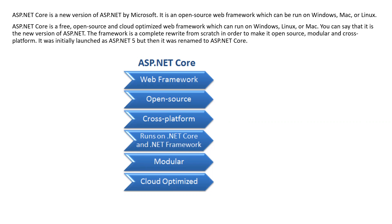ASP.NET Core was initially introduced by Microsoft and later built as an open source framework. It is a free, open source, and cloud-optimized framework which can run on Windows, Linux, and Mac operating systems. You can say that it is a new version of ASP.NET Framework — the framework is a complete rewrite from scratch in order to make it open source, modular, and cross-platform.